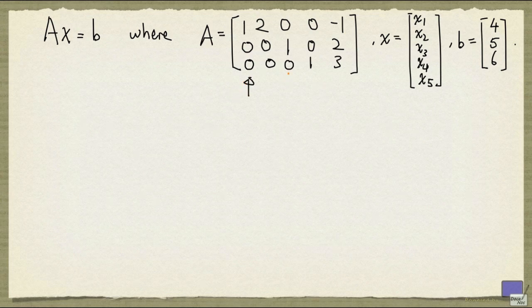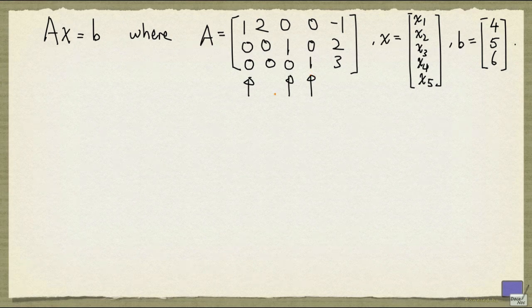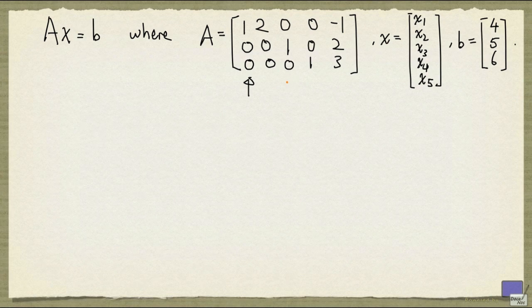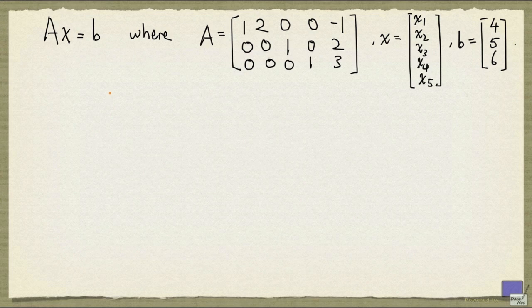And to quickly get a solution, notice that the first, third, and fourth columns are the pivot columns. So we can set x1 to 4, x3 to 5, and x4 to 6, and x2 and x5 to 0. That will give you a solution to the system. But since we have two free variables, namely x2 and x5, there are going to be infinitely many solutions.